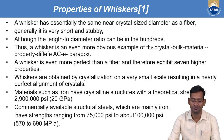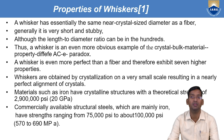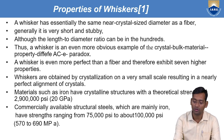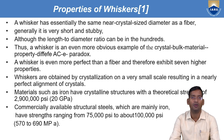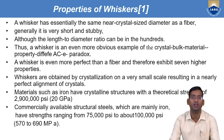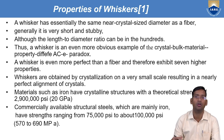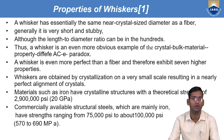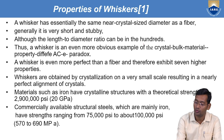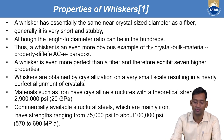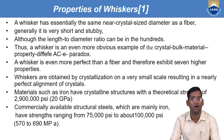First, properties of whisker. A whisker has essentially the same near-crystal-size diameter as a fiber — whisker also having nearly the same diameter size as fiber only. Generally it is very short and stubby. For fiber, the diameter-to-length ratio should be greater than 1000, but here that length is short — so we can say it is a fiber of shorter length. Although the length-to-diameter ratio can be in the range of 100, whereas for fiber it is in the range of 1000. Suppose if 1 mm diameter is there, then 100 mm to 200 mm length will be of the whiskers.